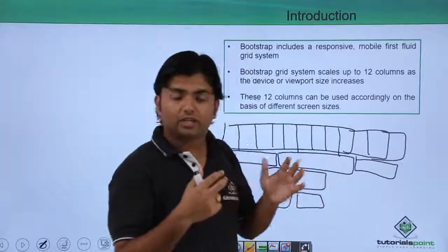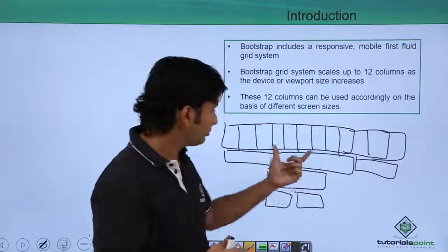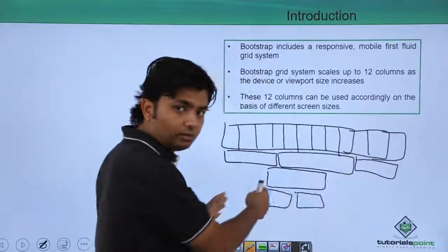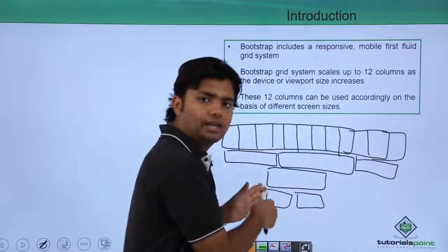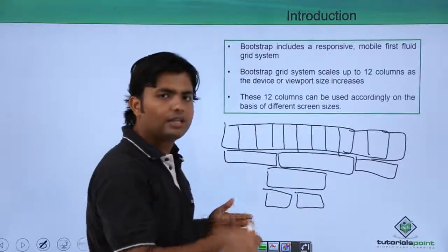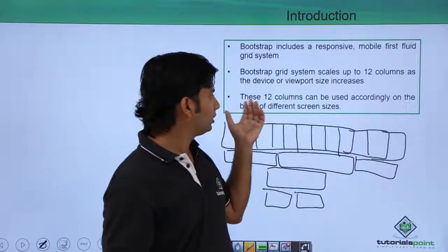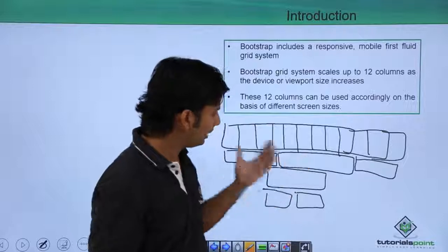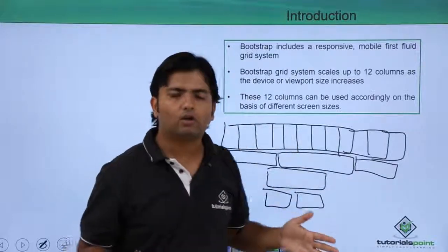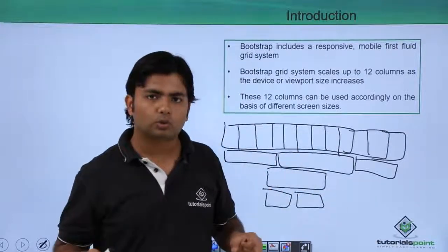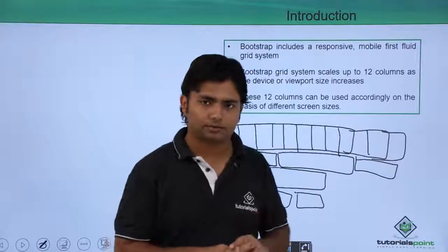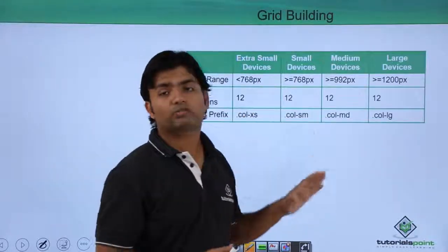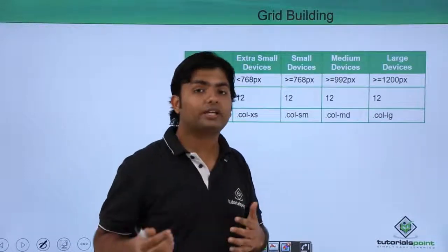If you consume more than twelve columns total, the remaining data will fall into the next line. We will see that in the practical implementation. These twelve columns can be used accordingly based on different screen sizes — it all depends on how you want to consume your twelve columns.